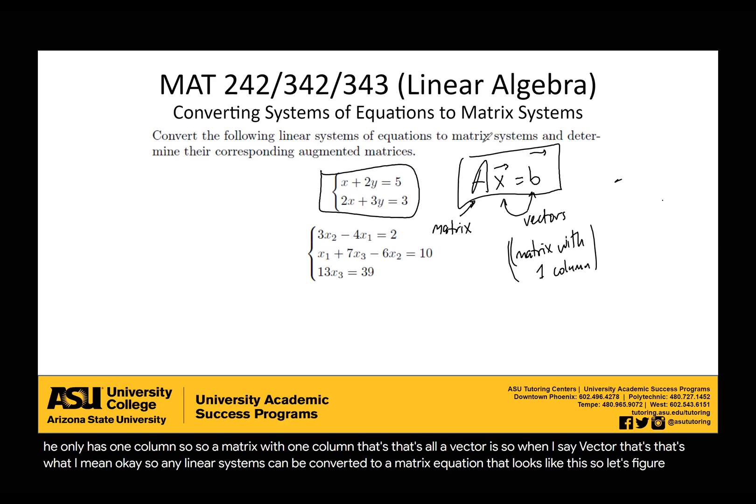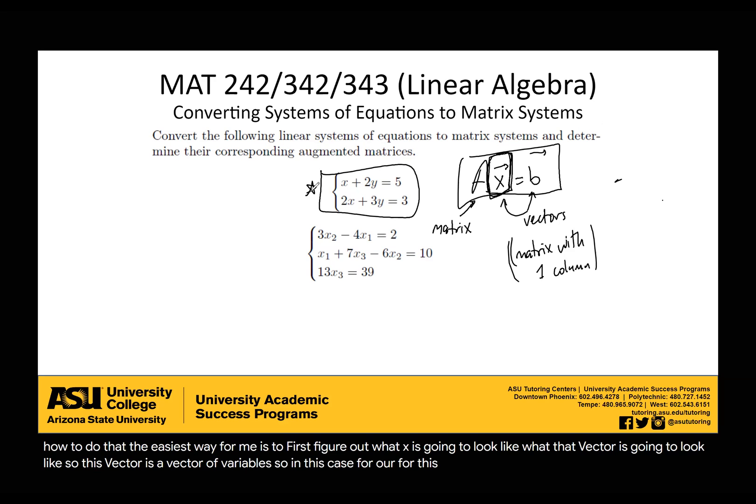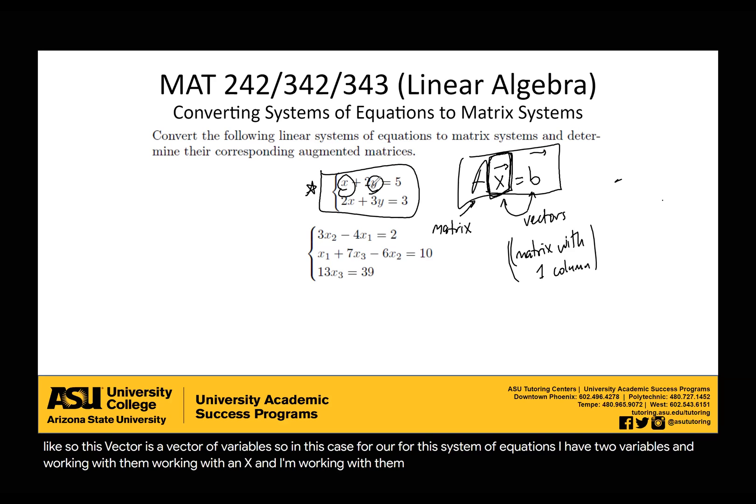So let's figure out how to do that. The easiest way for me is to first figure out what x is going to look like, what that vector is going to look like. This vector is a vector of variables. In this case, for this system of equations, I have two variables: x and y. So my vector can either look like [x, y] or [y, x].